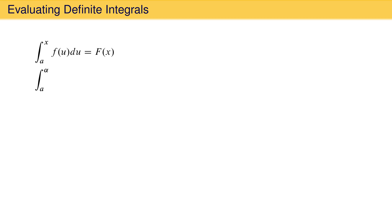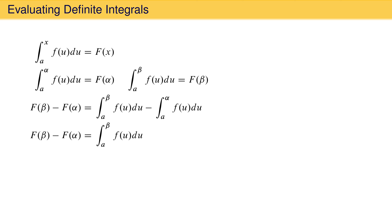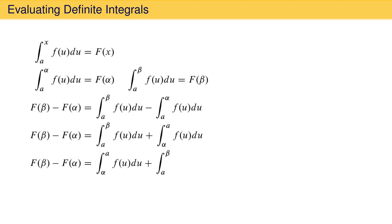Let's imagine that the indefinite upper limit of integration is some value alpha, so we evaluate the integral from a to alpha of f of u. The result is capital F evaluated at alpha. Now imagine x is set equal to a different value called beta, so we integrate from a to beta. The result is capital F evaluated at beta. Taking the difference, F at beta minus F at alpha equals the integral from a to beta of f of u du minus the integral from a to alpha of f of u du. Using properties of definite integrals, we change the order of integration in the second term to give plus the integral from alpha to a of f of u du. We can then write the sum of integrals as capital F at beta minus capital F at alpha equals the integral from alpha to a plus the integral from a to beta of f of u du.